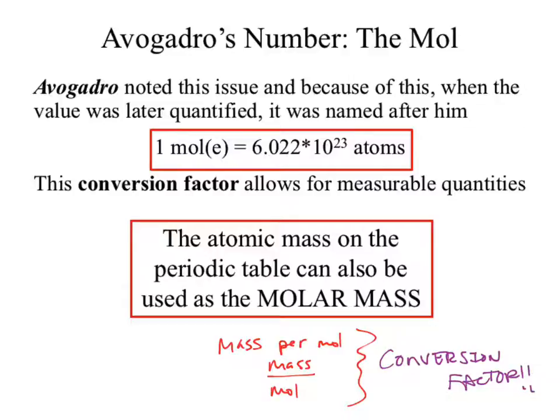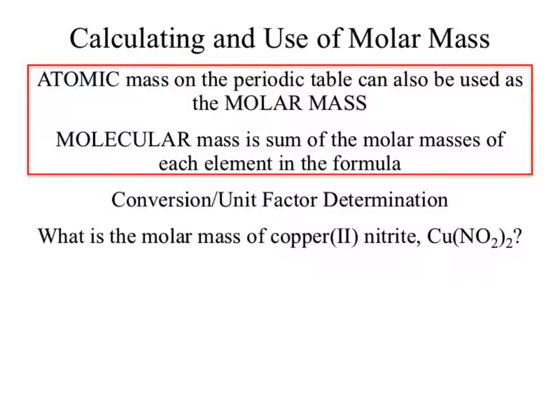That molar mass will be different for every single element because the atomic mass is different for every single element — different protons and neutrons contribute to the mass.